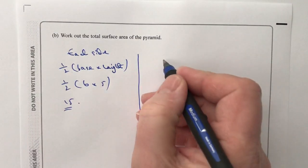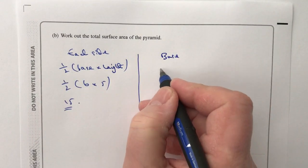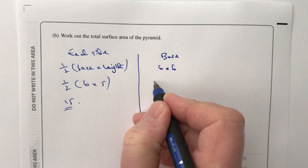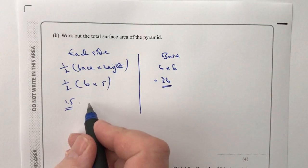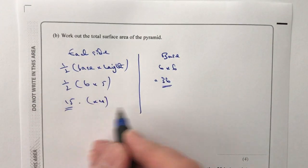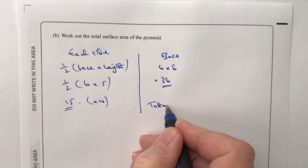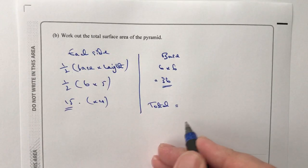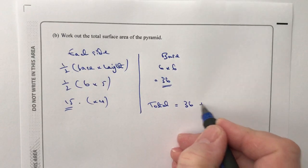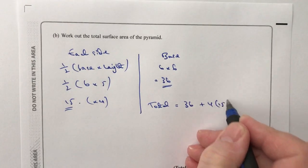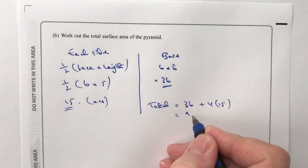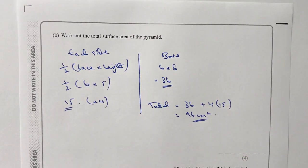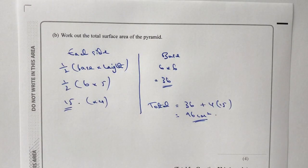The base is simply six times six because it's a normal square, so the base area is 36. The total surface area is 36 plus four lots of 15. Adding all of that together gives 96 centimetres squared, and that would be the answer to this question.